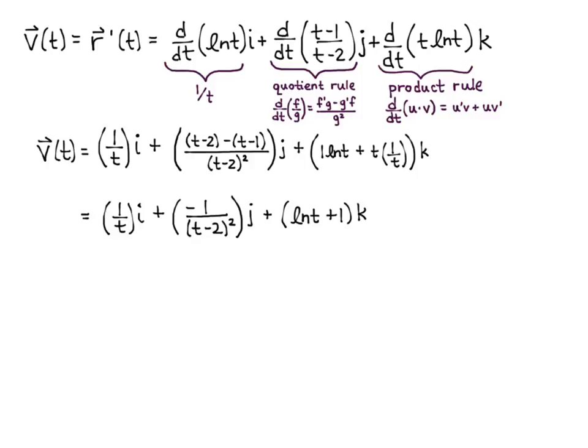And I want the velocity at the point t₀ equals 1. So now we plug in t₀ equals 1 to find our direction vector. v of 1 equals 1i plus negative 1j plus 1k, just plugging in a 1 everywhere there's a t. And so vector v₁, v₂, v₃ for my formula is 1, negative 1, 1.